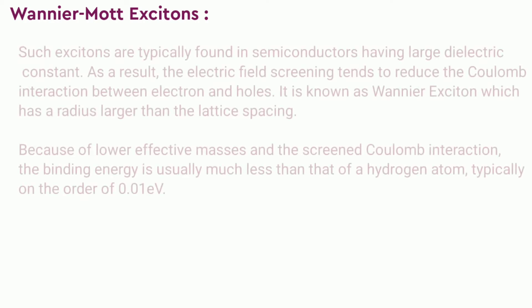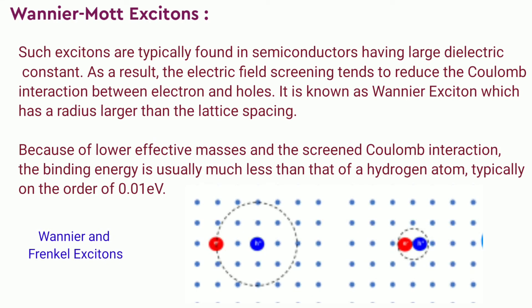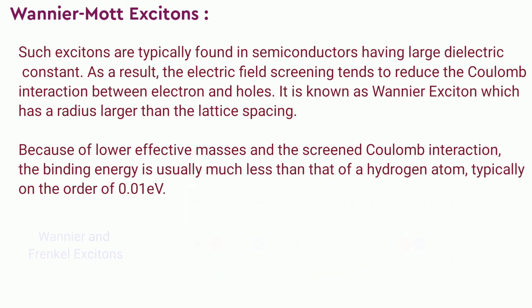Wannier-Mott excitons: In semiconductors, the dielectric constant is generally large. Consequently, the electric field screening tends to reduce the Coulomb interaction between electrons and holes. The result is a Wannier exciton, which has a radius larger than the lattice spacing. A small effective mass of the electron, typical of semiconductors, also favors large exciton radii. As a result, the effect of the lattice potential can be incorporated into the effective masses of the electron and hole.